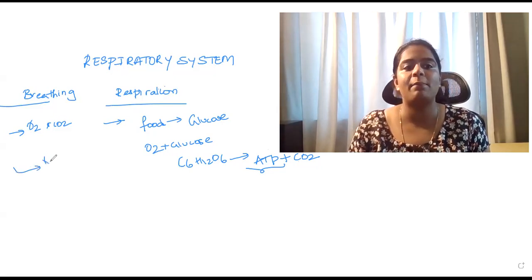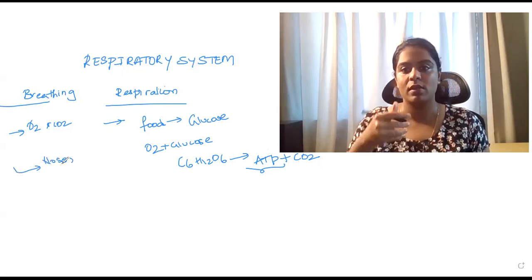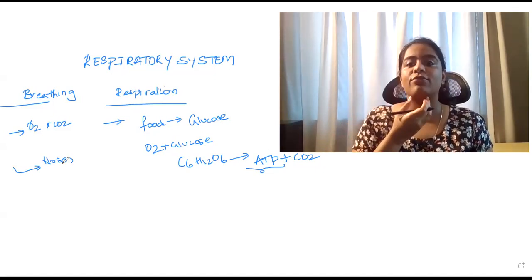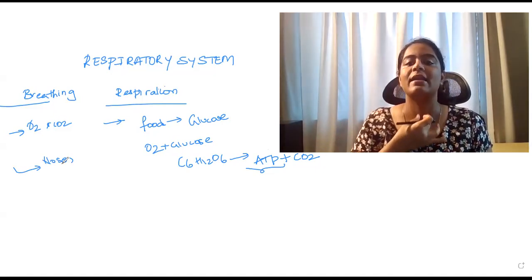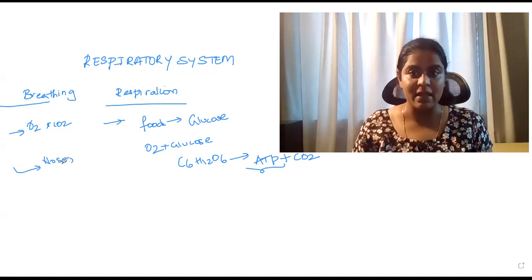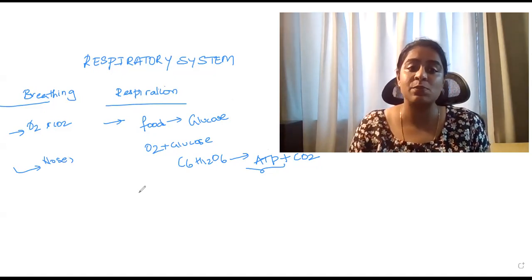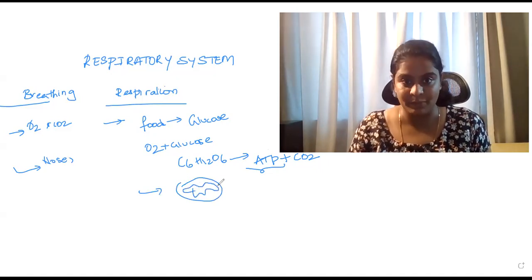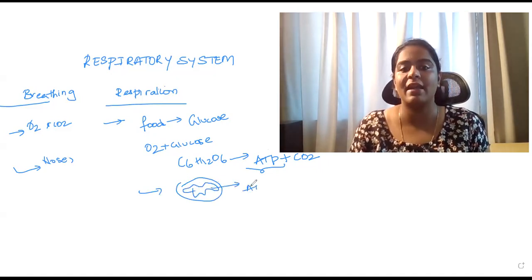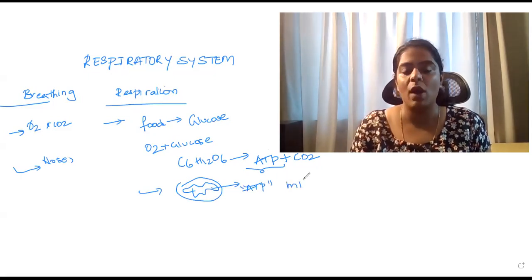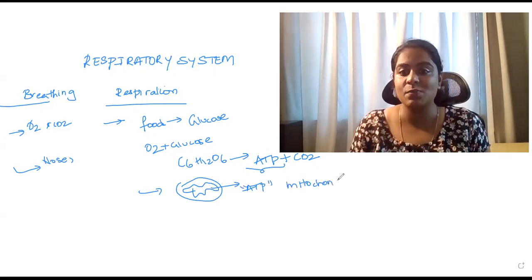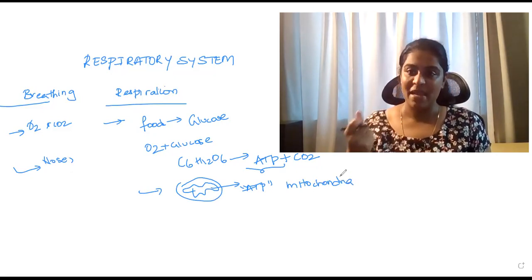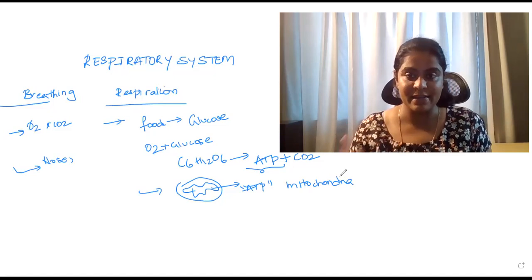Where is breathing happening? It starts with the nose, then goes into your nostrils, nasal cavity, then pharynx, then larynx, then comes the trachea, and then comes the lungs. Whereas respiration takes place in the mitochondria of the cell — that is where ATP is formed. That is the reason why mitochondria is called the powerhouse of the cell, because it is here where the main energy is derived.